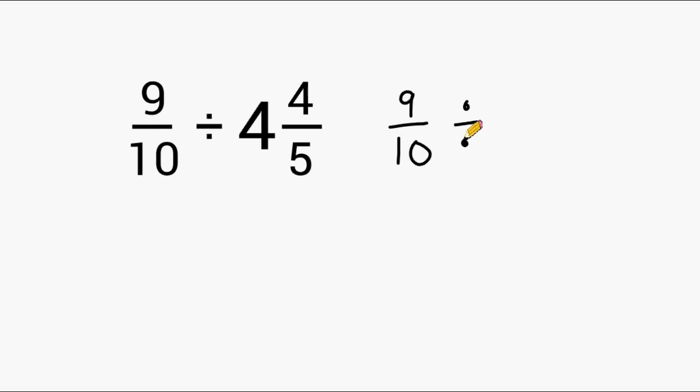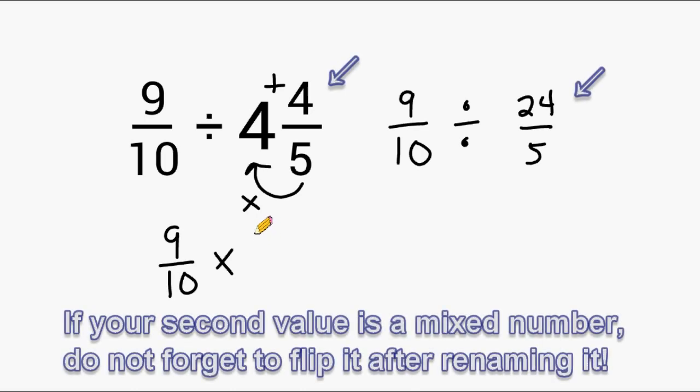Let's rename this mixed number as an improper fraction. Our denominator stays the same so we leave that a 5, then we multiply 5 times 4 which is 20, and then we add 4 to the product of 20 which is a total of 24. Once we have both values written as fractions, we take our first fraction and rewrite it. We change our division sign into a multiplication sign and then we write the reciprocal of 24 fifths which would be 5 24ths.